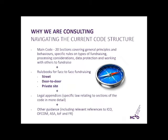We're also aware that navigating the current code structure isn't easy. The main code has 20 sections covering general principles and behaviours, specific rules about types of fundraising, processing considerations, data protection, and working with others to fundraise. It's quite a mixture and there's no clear way of navigating the rules.